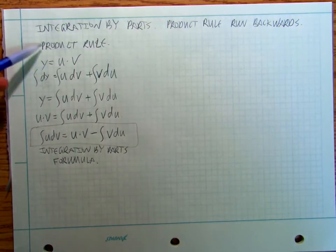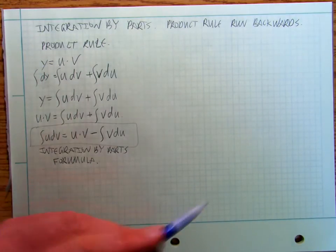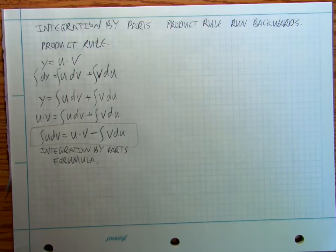So I take my product rule formula and I basically just reverse it and if I reverse it, I get my integration by parts formula.